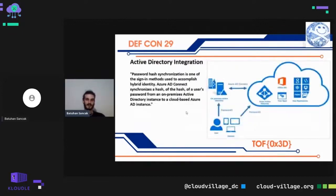Active Directory integration: a user can use the same credentials on the company network and in the cloud. For this, the password hashes must be equal. Companies generally use password hash synchronization. Password hash synchronization is one of the methods used to accomplish hybrid identity. Azure Active Directory Connect synchronizes a hash of a user's password from an on-premises Active Directory instance to a cloud-based Azure Active Directory instance.